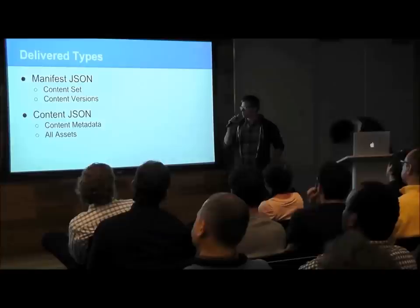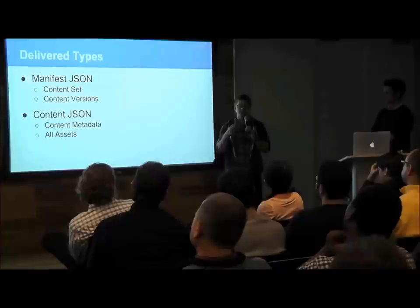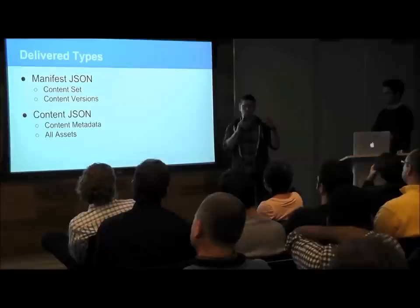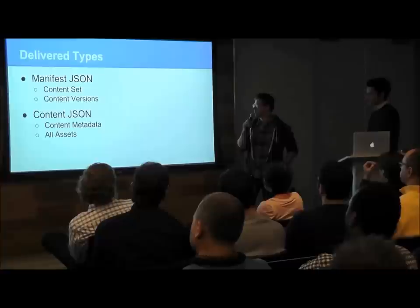Once the manifest is retrieved, the user's device makes another request for each content item it needs — meaning items it has never downloaded or that are out of date. It gets a JSON response that tells the device the metadata for that content pack, how to display it, and delivers paths to all the assets where it can download stickers and frames.